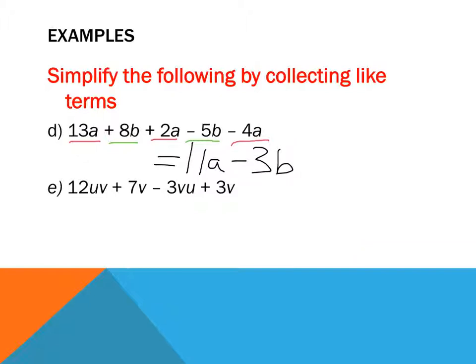Last example here, 12uv. Now isn't this interesting? I've got uv here, and I've got vu. It doesn't matter what order the pronumerals are in, so I can say uv or vu. They just have to be together. So these ones here are actually like terms. So vu and uv are exactly like terms. And then I've got the 7 plus 3. That's a really interesting point to make.